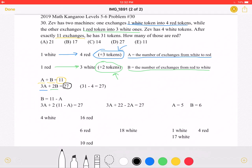27 because he has a total of 31 in the end, but we must subtract 4 because he starts with 4 white tokens. So that's where we got the 27.